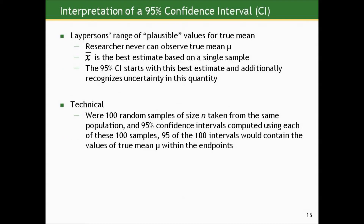One way to think of this — the layperson's or intuitive perspective — is that this gives us a range of plausible values for the true mean. We take a single sample, get an estimate that suffers from sampling variability, and we build in that variability by putting a range of uncertainty around our best guess. Technically speaking, what a 95% confidence interval means is: were we to take 100 random samples of the same size and create a 95% CI from each, 95 of the 100 intervals would contain the true mean mu, and 5% would miss it.